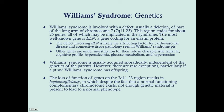The most well-known gene affected — and truly affected in almost all cases of Williams syndrome — is ELN, which codes for a protein that goes into elastin. The defect involving ELN is probably responsible for the cardiovascular issues and connective tissue pathology seen in these patients. Other genes are under investigation for their role in the characteristic facial features, cognitive profile, hypercalcemia, glucose metabolism, and hypertension.